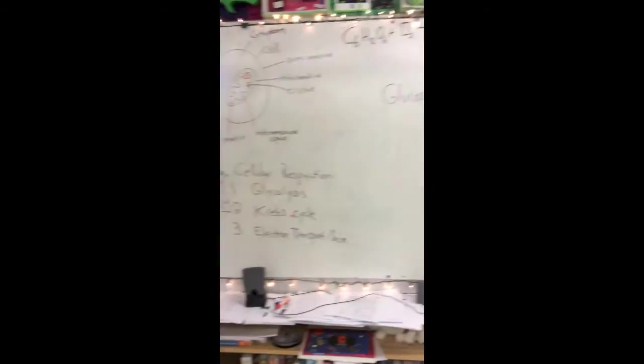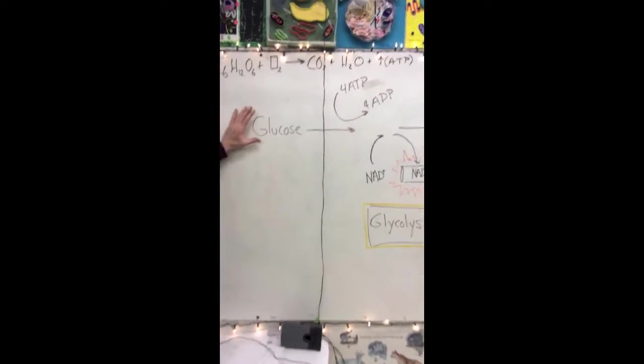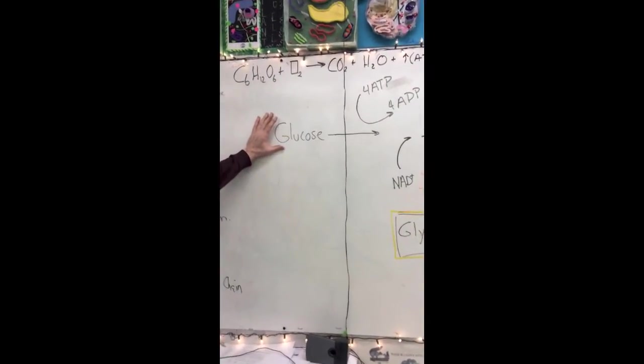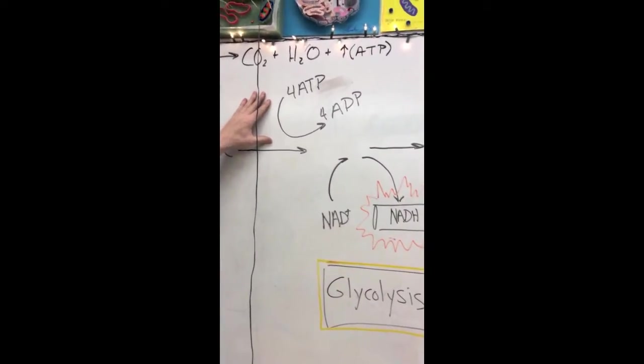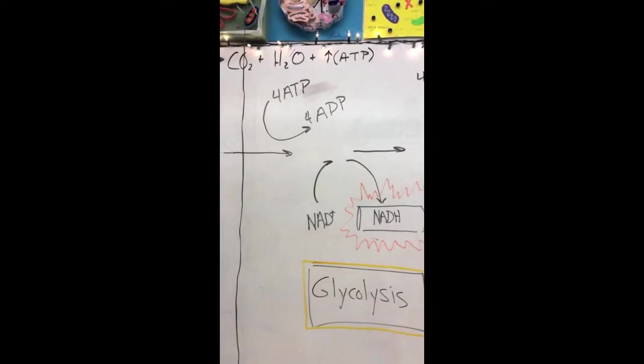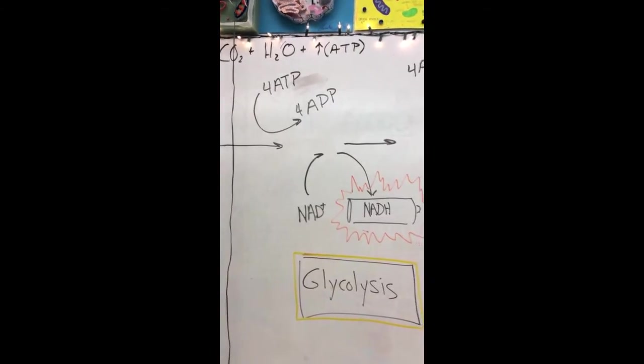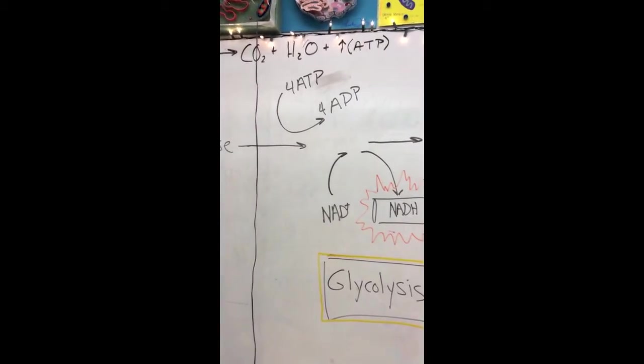Starting with glycolysis, glucose is brought into the cytoplasm of a cell. It is split by the addition of four ATPs, which generate four ADPs, and actually cut the glucose in half.